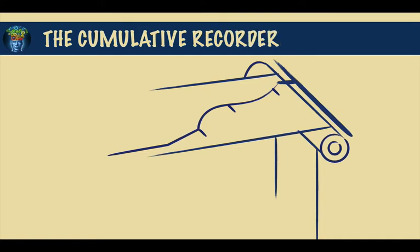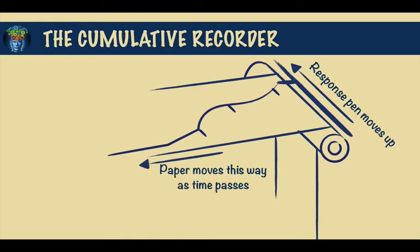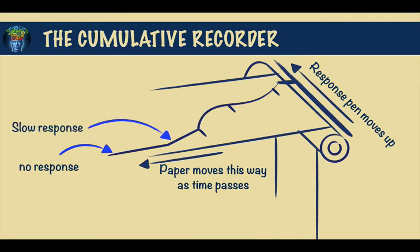To understand the use and effects of various reinforcement schedules, it's helpful to see how it is described on a cumulative recorder. This is a device on which a pen makes a mark on a steadily moving bit of paper. For each response, this pen moves upwards a little, so if the subject makes no response, the line remains straight. A slow response will make the line go up a little, and a faster response will be indicated by a steeper slope.